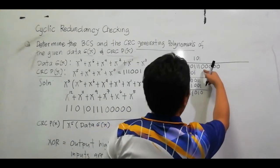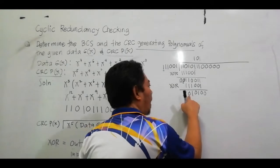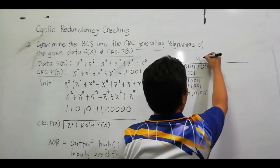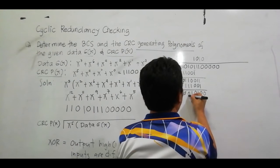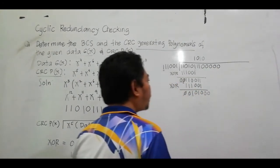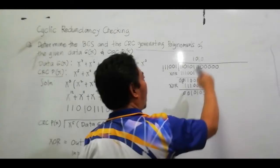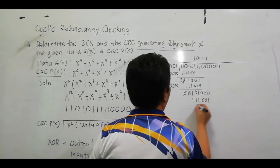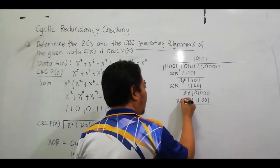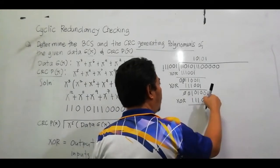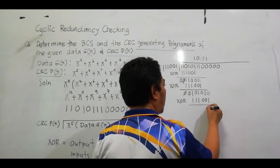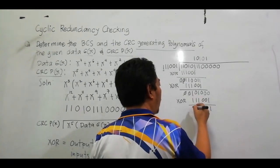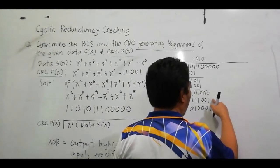Bring down 0. Most significant bit is 1, so quotient is 1. Multiply: 1 1 1 0 0 1. XOR again: 0,1=1; 0,0=0; 0,0=0; 1,1=0; 1,0=1; 1,1=0. Cancel out and bring down 0. Most significant bit is 1, so quotient is 1. Multiply 1 1 1 0 0 1 again.